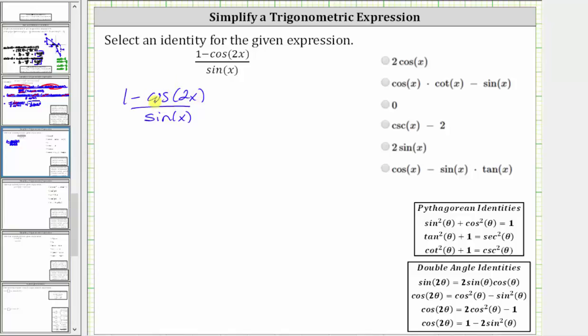But because we're subtracting cosine two x, we need to subtract the quantity one minus two sine squared x, which means the given expression is equal to one minus, and then in parentheses, we have the quantity one minus two sine squared x. And all this is divided by sine x.